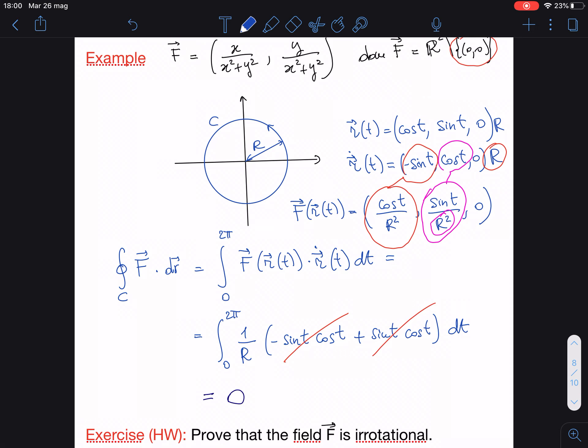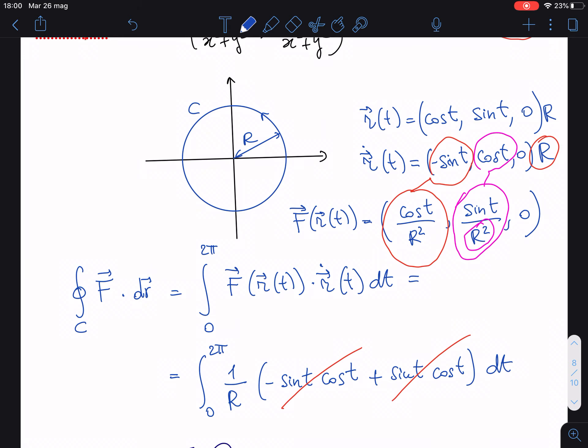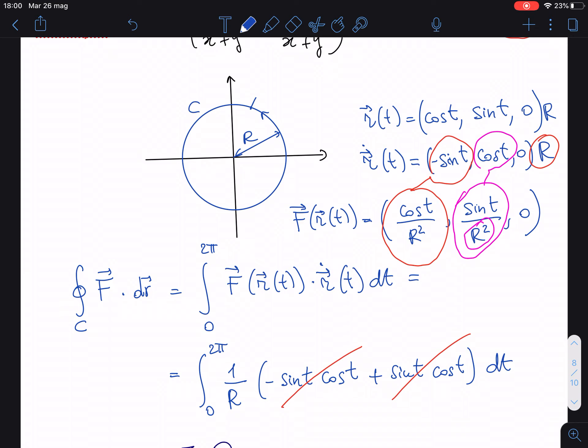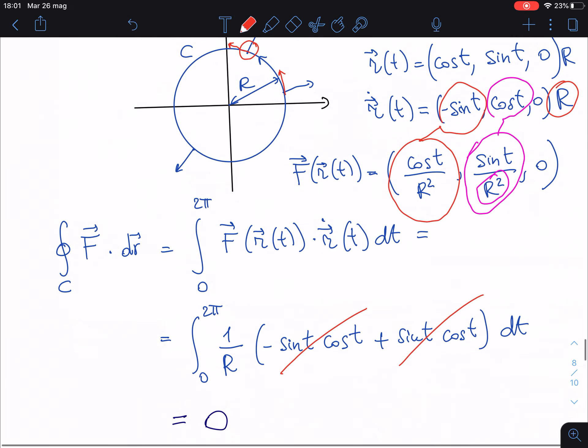And here you can ask, why the line integral, the circulation on c, is zero? Because this field is oriented like that, always orthogonal to this circle, while the previous one, the one that gave us so many problems, was parallel to the circle. So it is clear that since it is orthogonal, the dot product here gives zero. And so the circulation, which is just the integral of a dot product that is always zero, gives zero too.